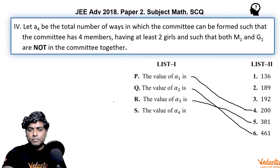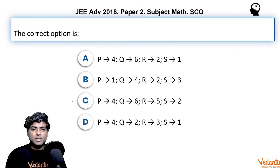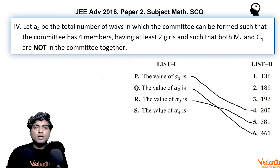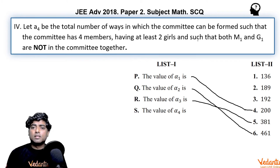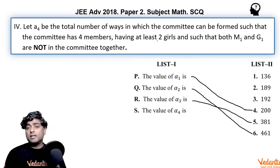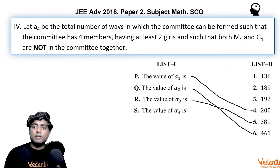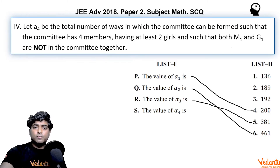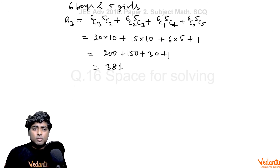So α1 maps to 4, α2 maps to 6, α3 maps to 5 — the pattern 4, 6, 5 corresponds to option C, which must be the correct answer. We'll also find α4 for completeness. α4 is the number of ways of forming a committee of four members with at least two girls such that m1 and g1 are not in the committee together. At least two girls means cases of two girls two boys, three girls one boy, or four girls zero boys.